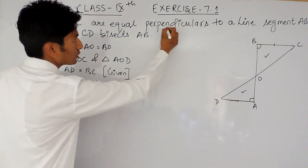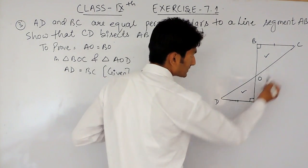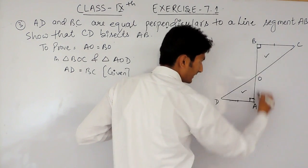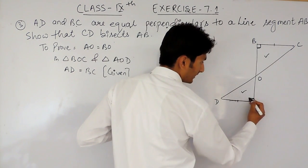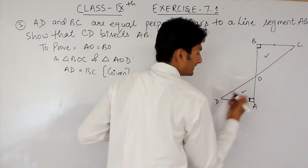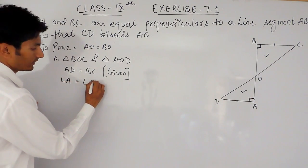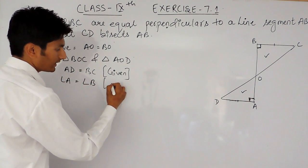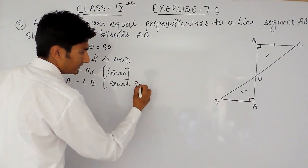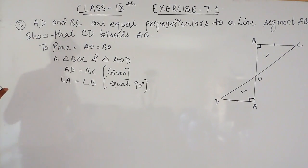Again, it is also given that these are perpendiculars, meaning these two lines must be making a 90 degree angle with AB. So obviously angle A and angle B must also be equal, because both are 90 degrees.